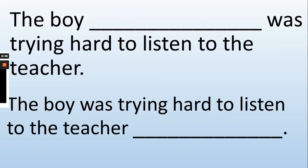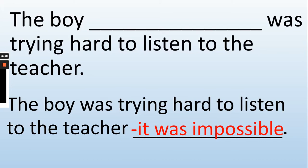Let's have a look at a second example. See how the extra information comes at the end of this sentence: 'The boy was trying hard to listen to the teacher — it was impossible.' I've used one dash to add this extra information at the end.